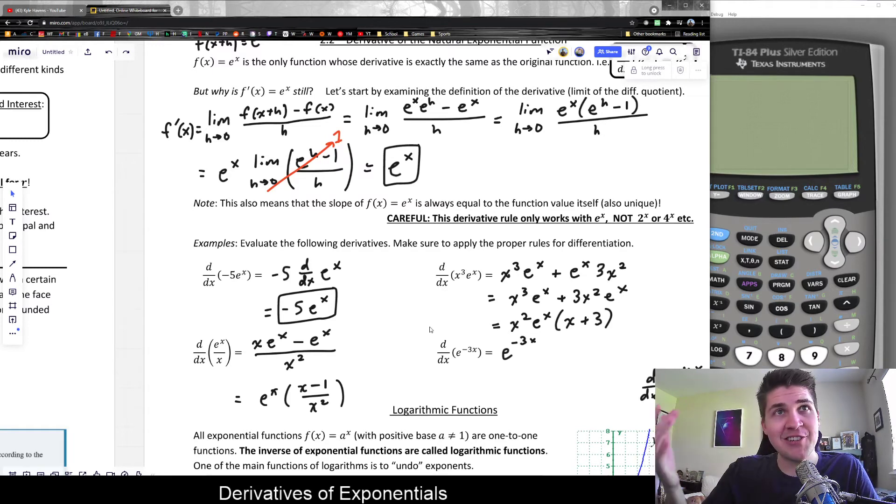But by the chain rule, I also have to multiply by the derivative of the inside, d/dx of negative 3x. And this is the chain rule in a nutshell. You can take the derivative of any function that has something else in the inside.